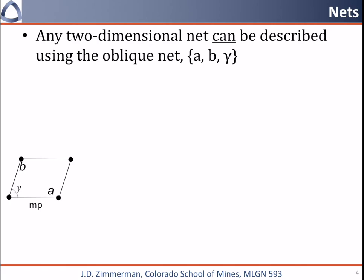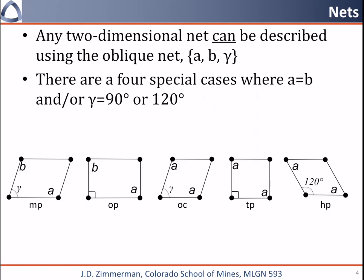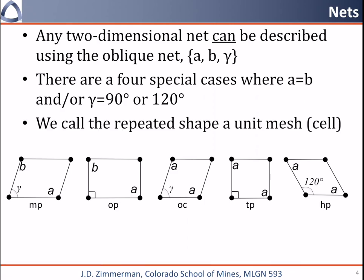Any two-dimensional net can be described using the oblique net, which has translation vectors t1 equals a and t2 equals b, and some angle between them gamma. There are four special cases, and these occur when the angle between a and b is 90 degrees, or when a equals b. The angle between the vectors can be an arbitrary gamma or 90 or 120 degrees. In real crystals, if the angle is not 90 or 120 degrees, it will be an irrational number. We call this shape the unit mesh; in 3 dimensions it will be a unit cell.